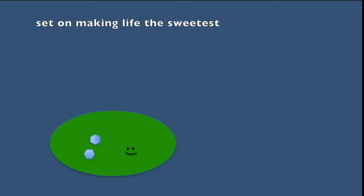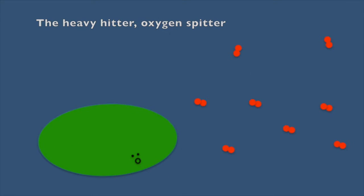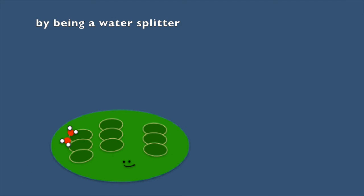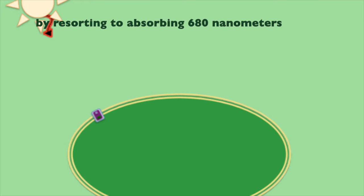The greenest, the leanest, set on making life the sweetest, a heavy hitter, oxygen splitter with a granite, got a lot fitter by being a water splitter, by resorting to absorbing 680 nanometers.